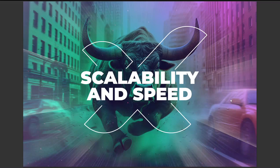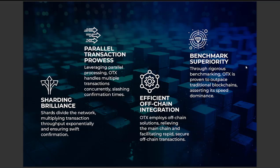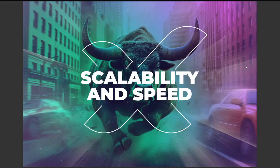We have really interesting information about the scalability and speed, including sharding brilliance. Shards divide the network, multiplying transaction throughput exponentially and ensuring swift confirmation. You can find information about benchmark super-priority, efficient off-chain integration, and parallel transaction prowess. The OTX project is really interesting.